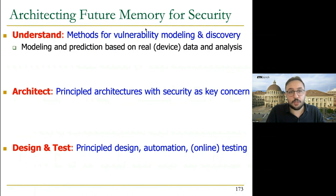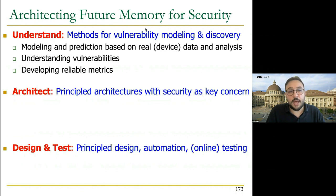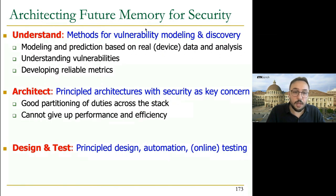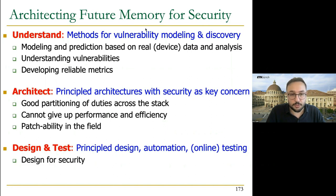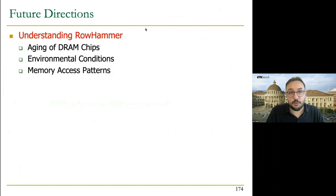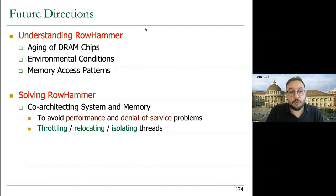To architect future memory for security, we need to develop methods for vulnerability modeling and discovery. Modeling and prediction based on real device data and analysis is important, understanding vulnerabilities is crucial, and developing reliable metrics is also important. For architecting, we need principled architectures with security as a key concern, good partitioning of entities across the stack, and we cannot give up performance and efficiency. Patchability in the field for new architectures is also important. As future directions, we need to understand RowHammer better — investigating RowHammer sensitivity to aging of DRAM chips, environmental conditions, and memory access patterns.